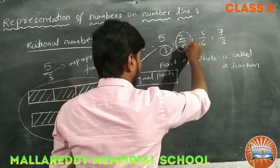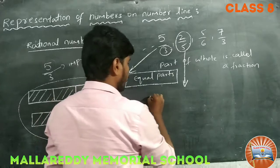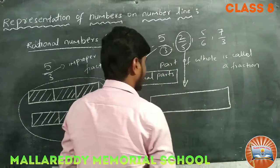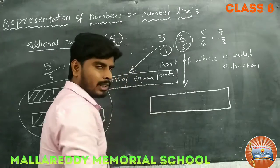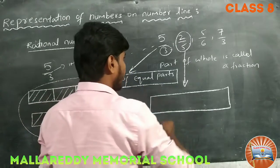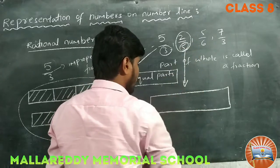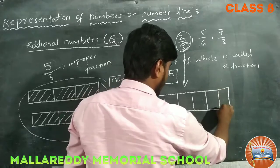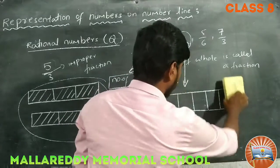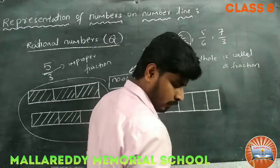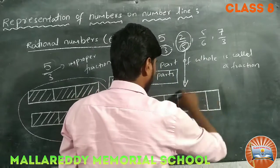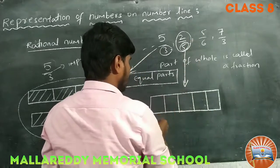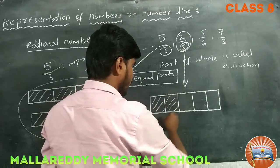For 2 by 5, it is the same approach. We take a rectangle — instead of a rectangle we can take many figures like leaves, circles, or squares. We have to make 5 equal parts: 1, 2, 3, 4, 5. This is the whole part divided into 5 equal parts, and only 2 are shaded here.